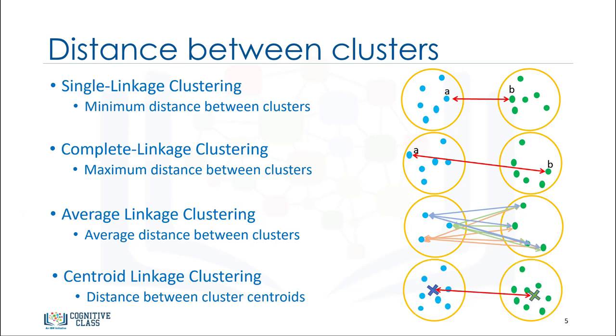The final linkage type to be reviewed is centroid linkage clustering. Centroid is the average of the feature sets of points in a cluster. This linkage takes into account the centroid of each cluster when determining the minimum distance.